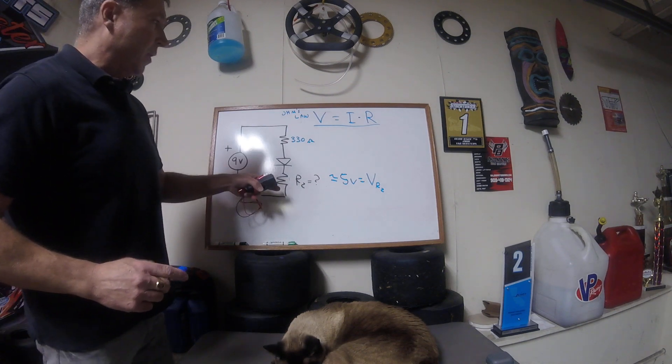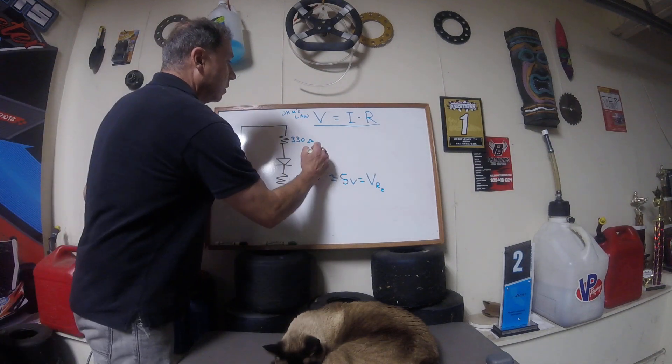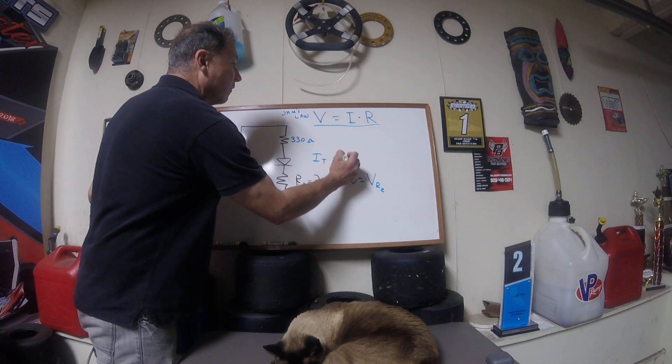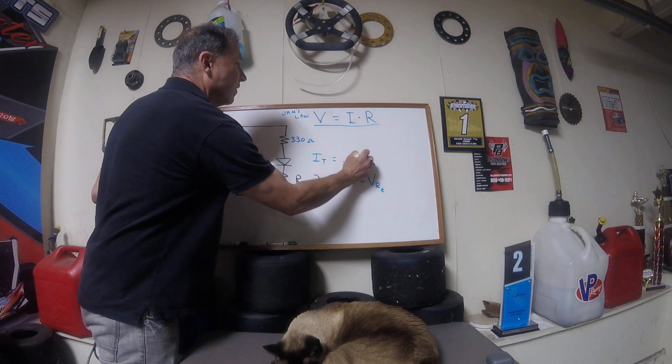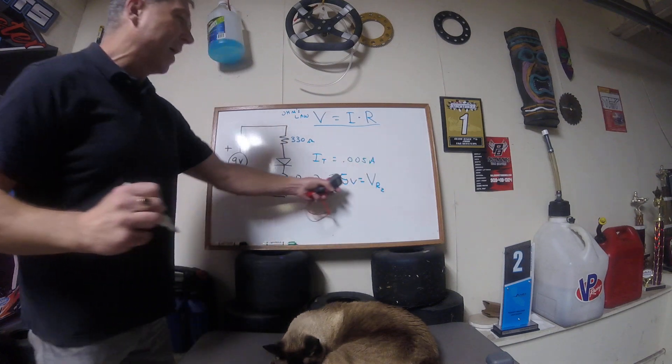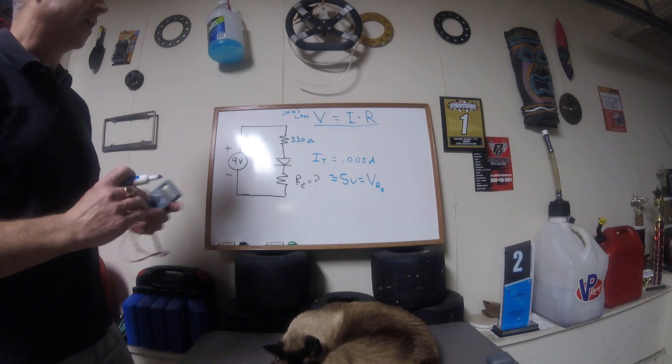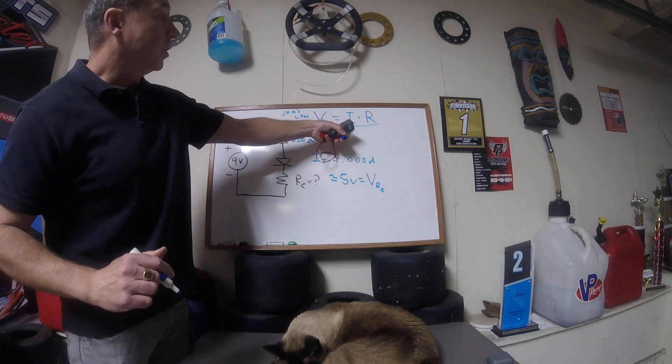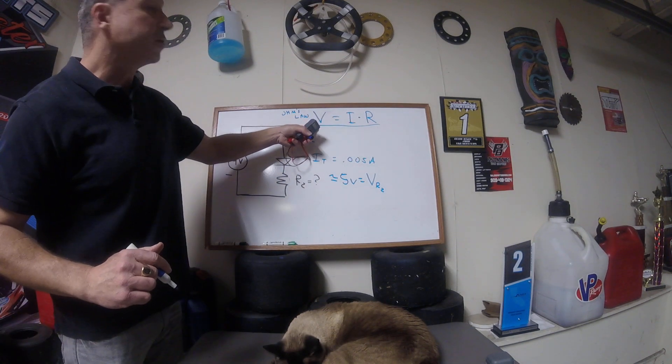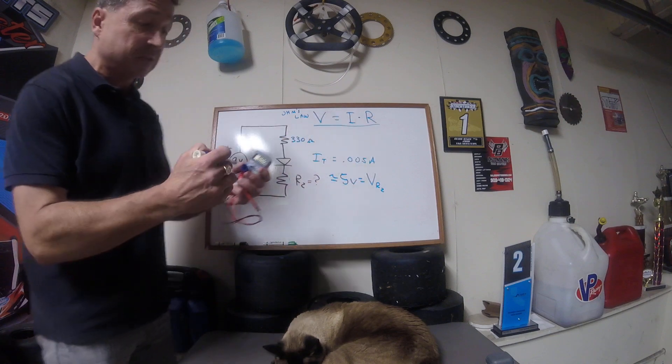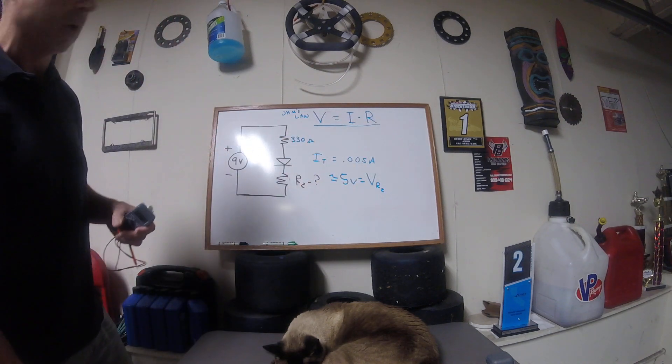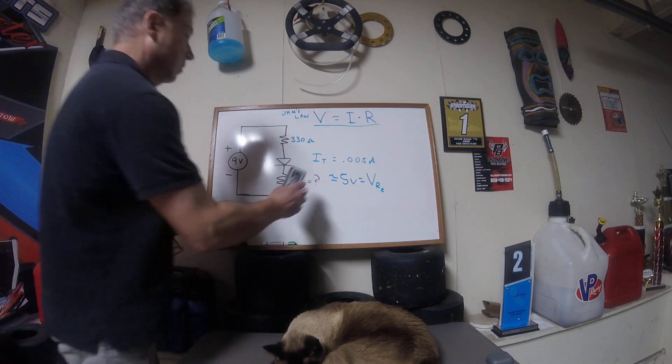So now what do we know about this? So we know that I total was about 5 milliamps, 0.005 amps. We measured the voltage across R2 as being 5 volts, and now we know the current, we know the voltage across R2, and we can find the resistance. We know 2 out of 3 from Ohm's Law, 2 out of 3 of the values.